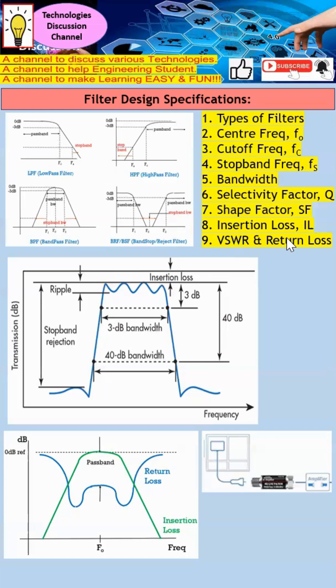VSWR and return loss. The green color is the S21, while the blue color is the S11, which is the return loss. You can see that S21 and S11 has an inverse relationship. With this, if you're keen to know more, see the playlist under the description.